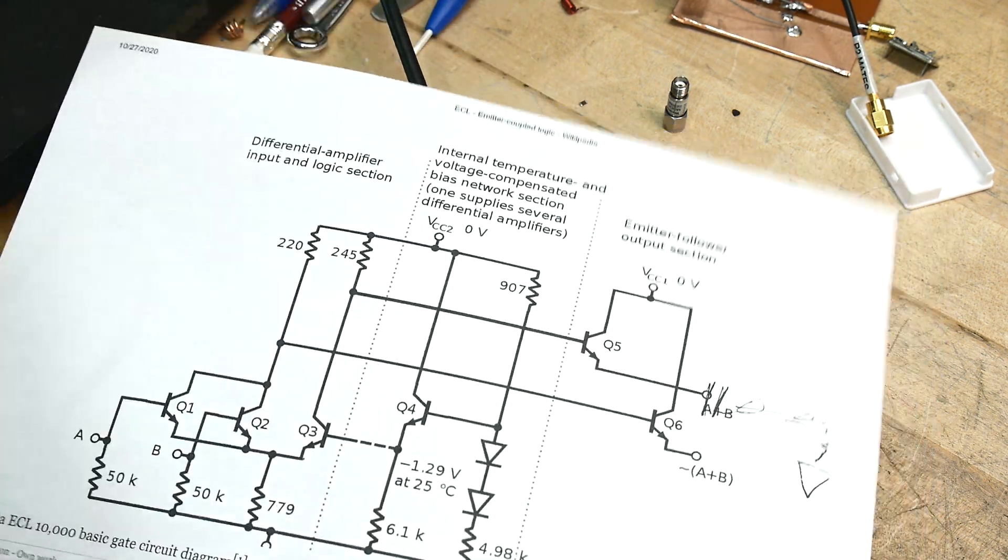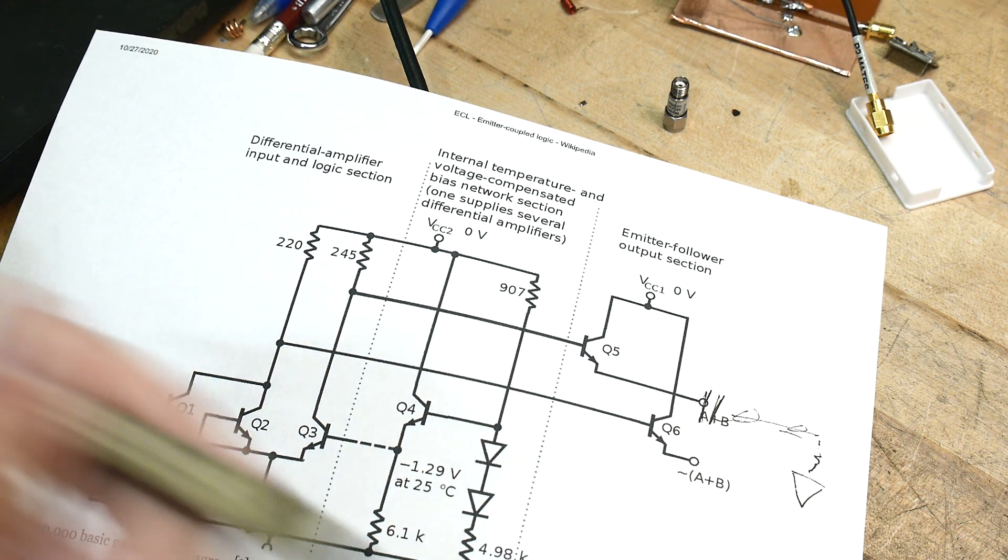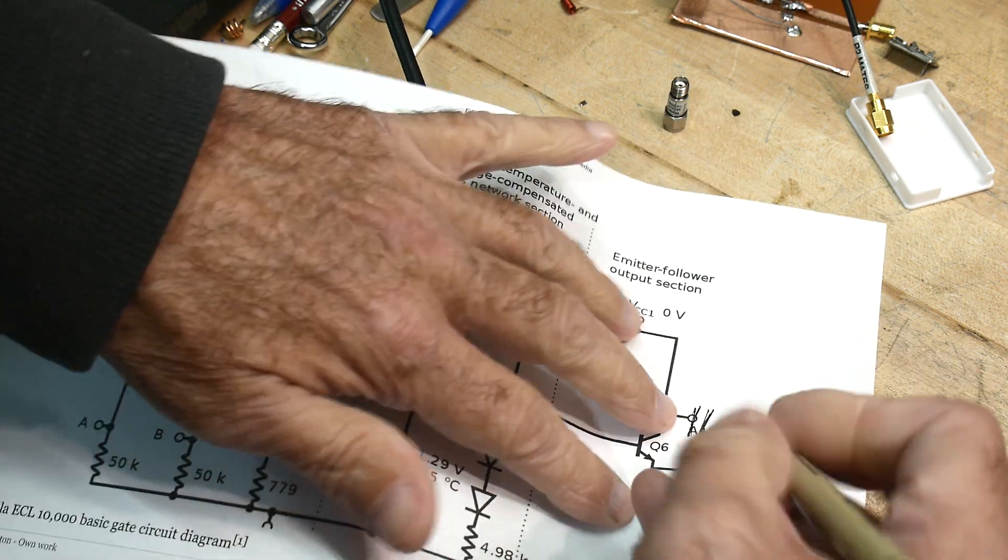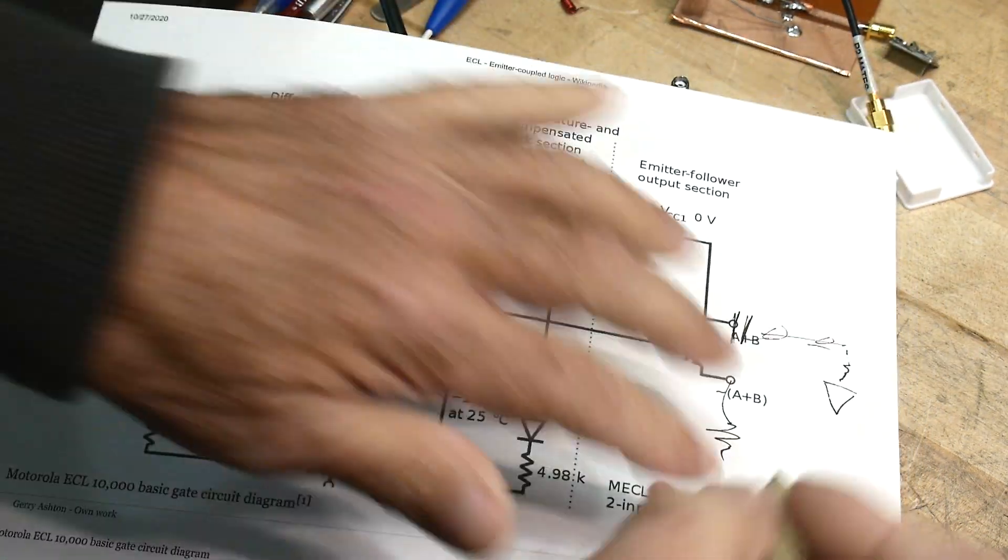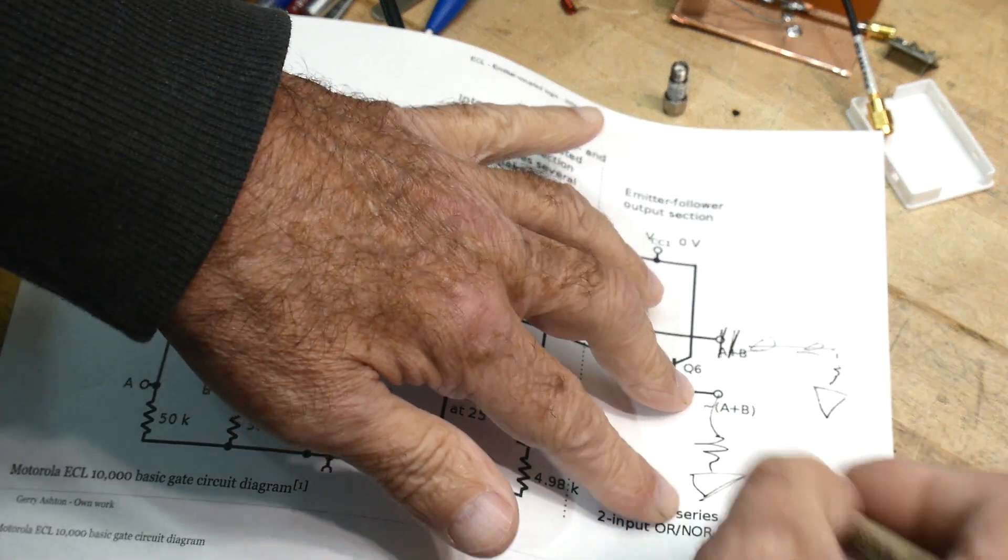Anyway, I went ahead and opened up the oscillator and put in a 1k resistor. This is not the schematic of the oscillator. This is just a representative schematic of ECHL. I put in a 1k resistor to ground.